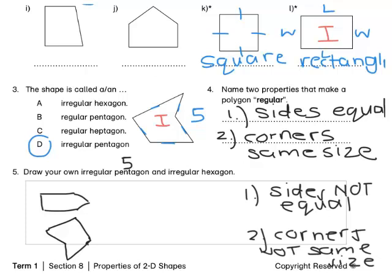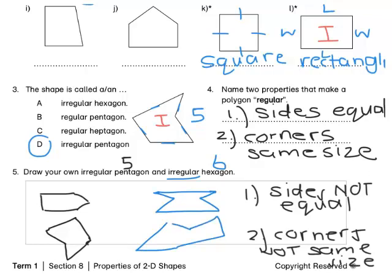If we look at a hexagon, a hexagon has got six sides and we must draw an irregular one. Here's one example of an irregular hexagon. Another example you could do like this — 1, 2, 3, 4, 5, 6. That's also an irregular hexagon because it has six straight sides. The shape is closed, but it looks funny because all the sides are not the same length. It's now your turn to draw your own.